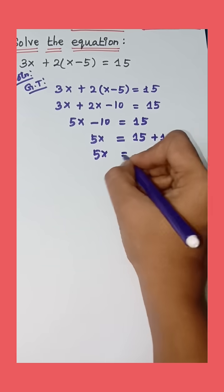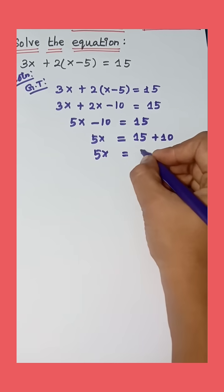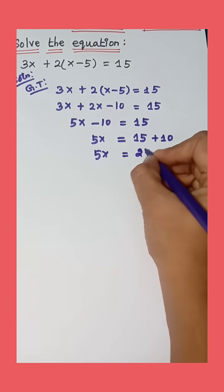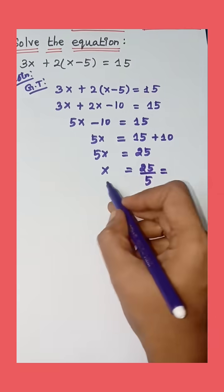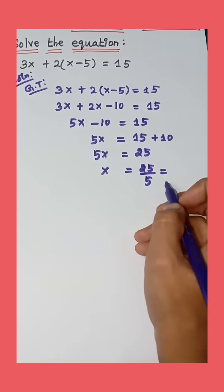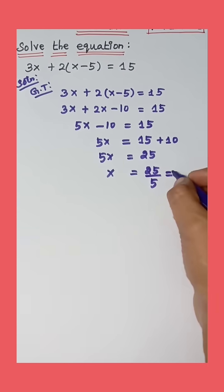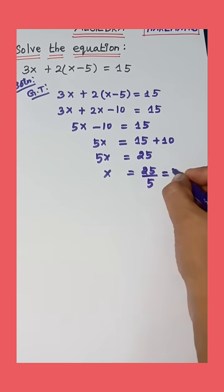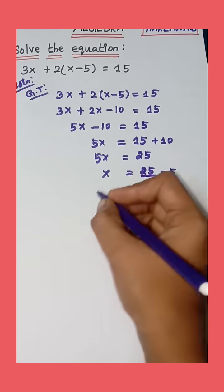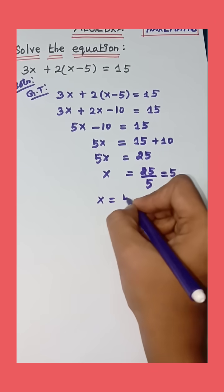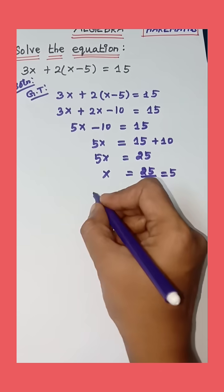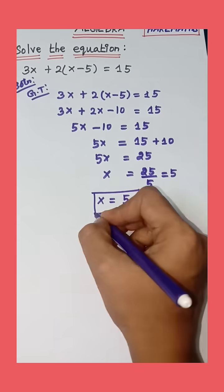5x equal to 25, so x equal to 25 divided by 5 equal to 5. The final answer is x equal to 5.